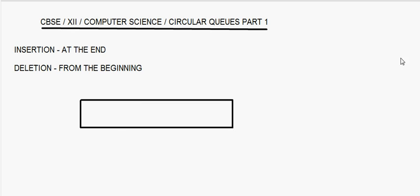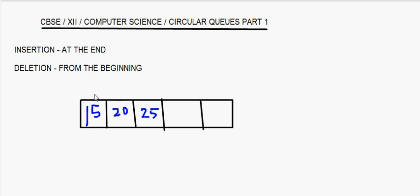Suppose I have a queue here with 5 slots, and I have elements 15, 20, and 25 — so I have 3 elements in this queue. When these 3 elements are there, this will be your front and this will be your rear.